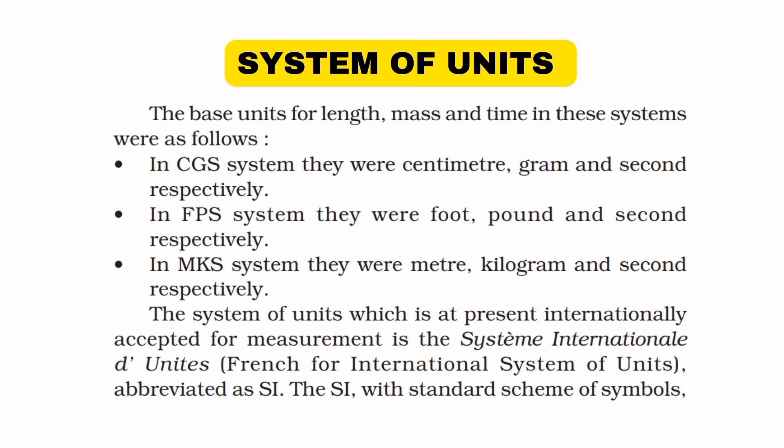Different types of units give us a system of units. There are mainly three types: CGS (centimeter, gram, second), FPS (foot, pound, second), and MKS (meter, kilogram, second).